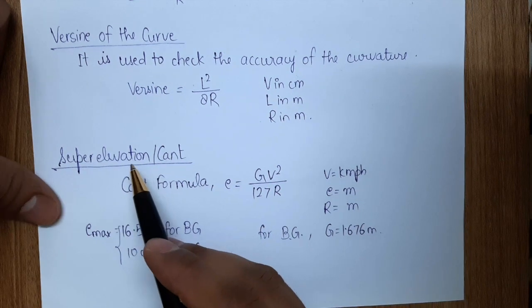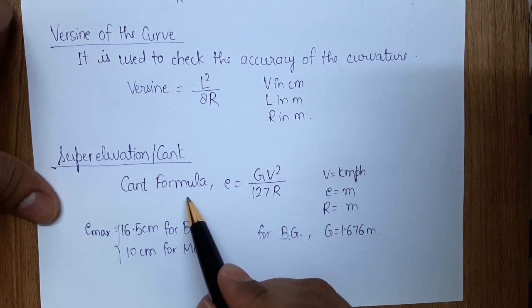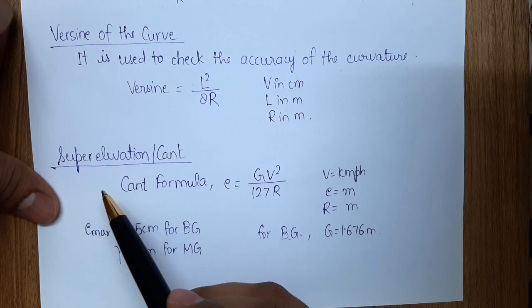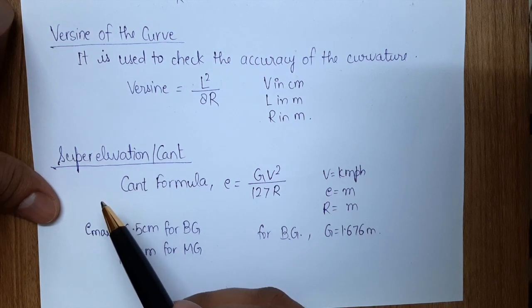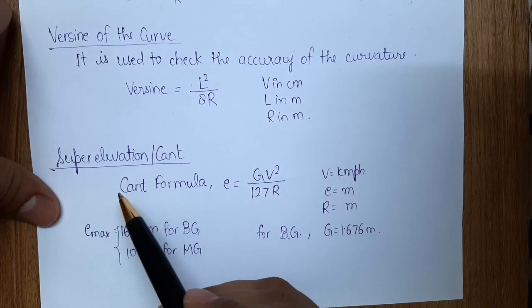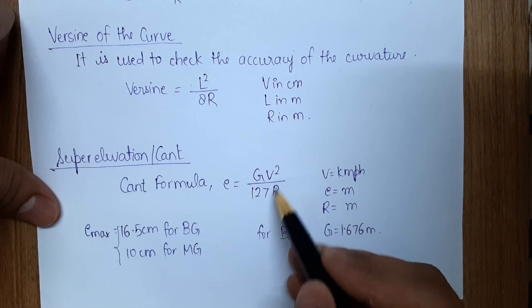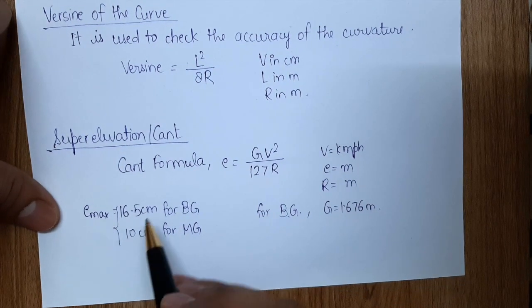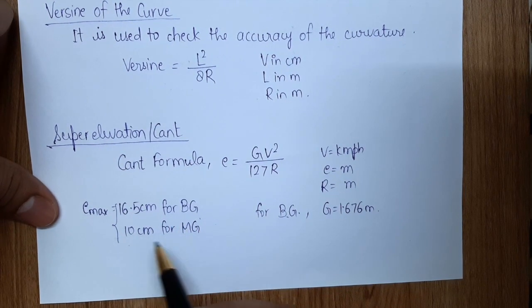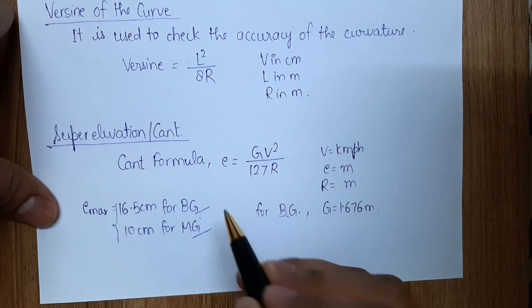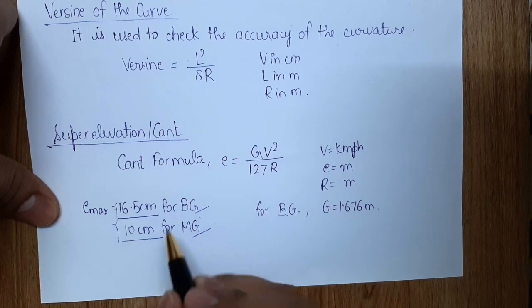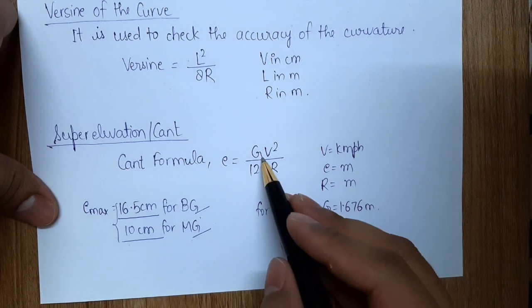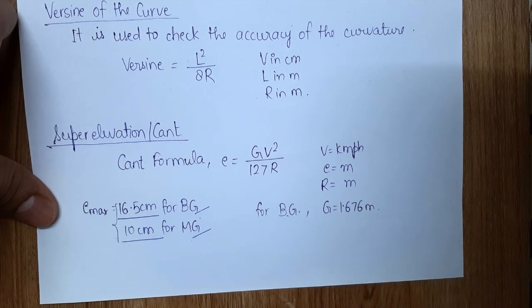Super elevation (cant) is provided at curves. The formula is: e = Gv²/(127R), where G is the gauge distance (1.676 m for broad gauge), v is in kmph, and R is in meters. The outer track level is raised with respect to the inner track. Maximum super elevation is 16.5 cm for broad gauge and 10 cm for meter gauge.